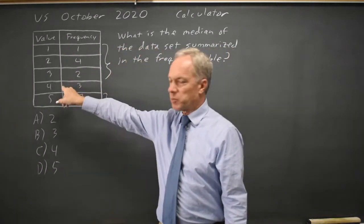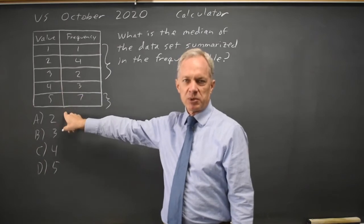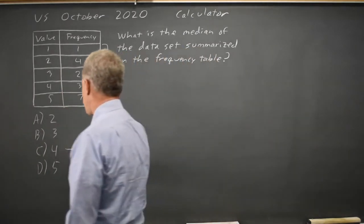So there are seven values below four, seven values above four. The median, the middle value, is four.